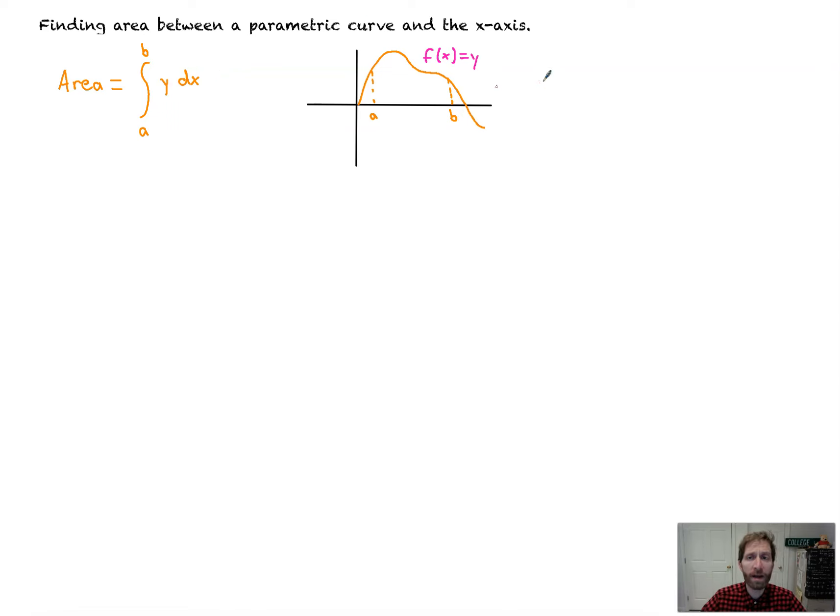Now, let's say that this is instead a parametric curve. So now this becomes x(t), y(t). Well, how do we deal with that? How do we find the area of that curve? It's actually not as bad as you might think.